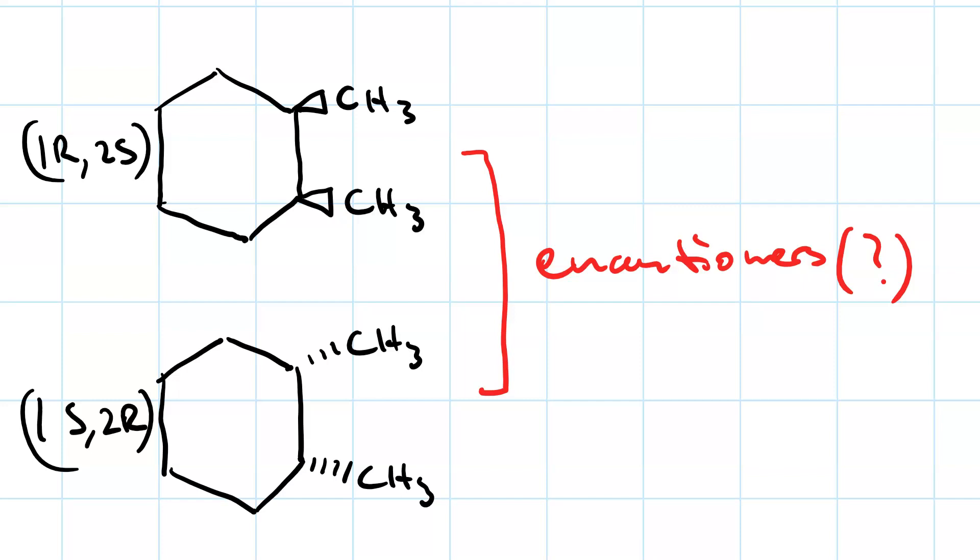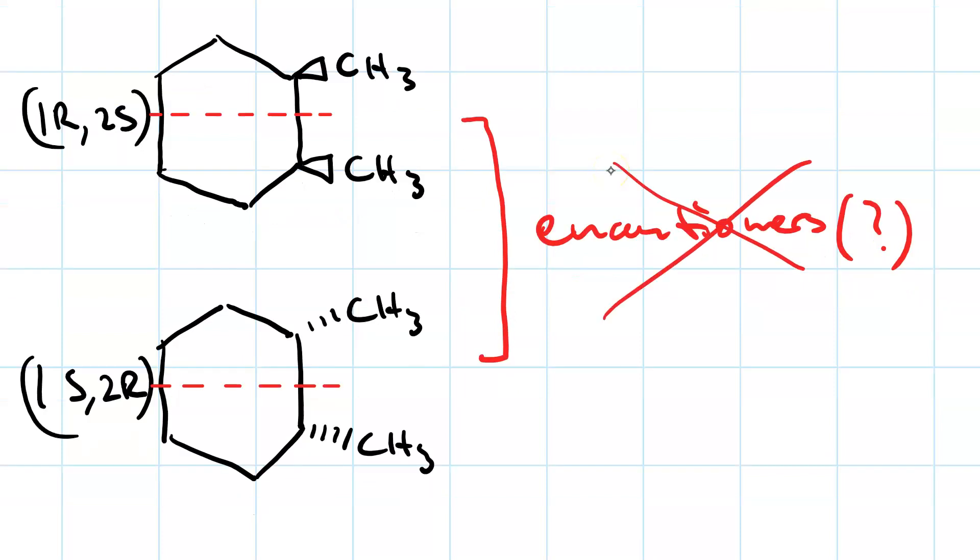So, this cis, 1,2-dimethyl cyclohexane, is too high symmetry to be chiral. In fact, it's what you call a meso molecule, because it's got a plane of symmetry. Right? Here's your mirror plane.